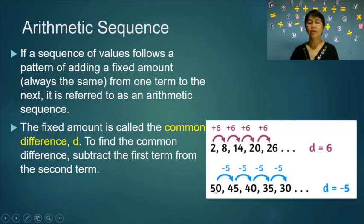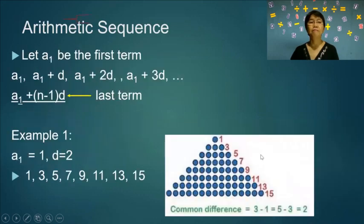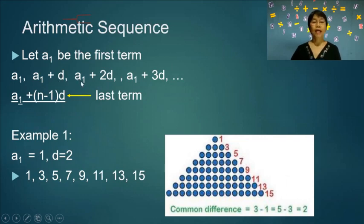In the second example, the second term 45 subtract 50 gives negative 5, and 14 minus 45 also gives negative 5, so the common difference is negative 5. Let a₁ be the first term. The second term is a₁ plus d, the third term is a₁ plus 2d, and the last term is a₁ plus (n minus 1) times d.